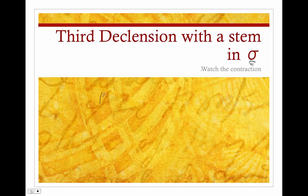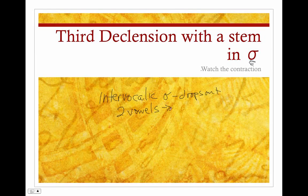It suffers from what's called an intervocalic sigma, which means that it is a sigma between two vowels. And when a sigma happens between two vowels, it drops out. So the intervocalic sigma drops out. We have two vowels, then they contract, and you get something new happening.